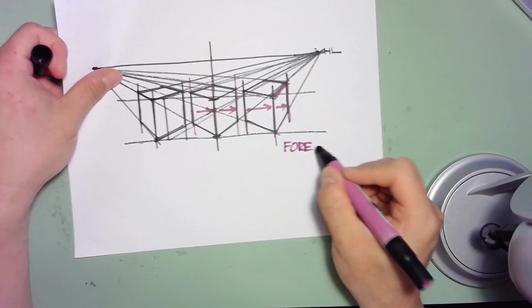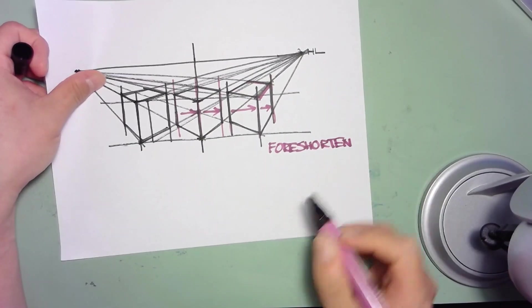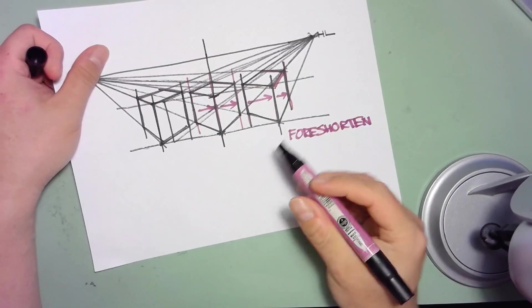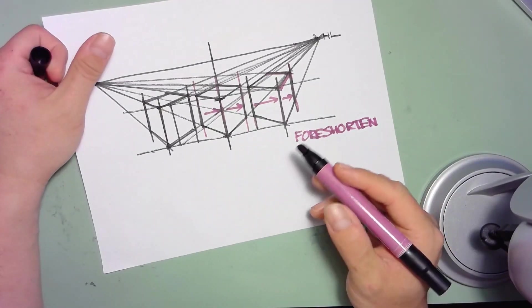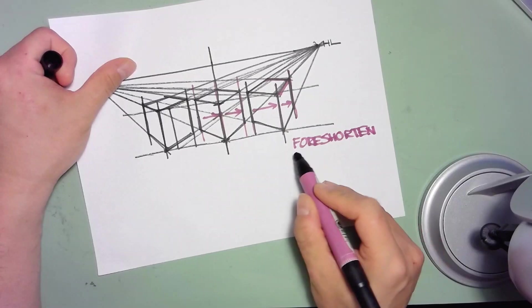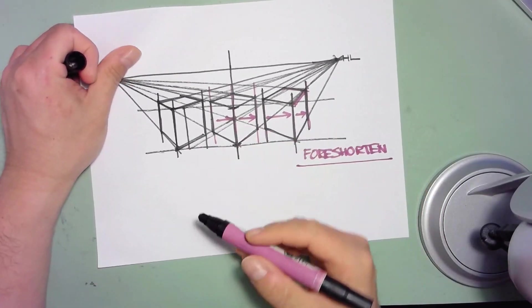And this is why this face looks a little bit bigger than this face over here. The word foreshortening is something that we will discuss more and more as you start drawing more and more objects, but just be aware that foreshortening is what is causing this particular phenomenon.